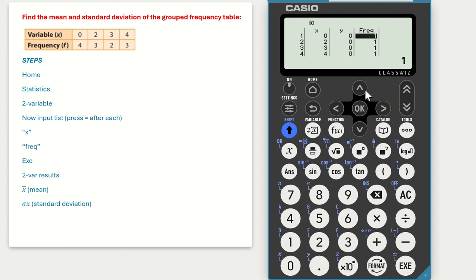So I'm now putting in the bottom line of my frequency table, so 4 and press equals after each input, so 3 equals, 2 equals and 3 equals.